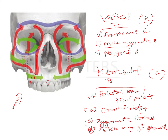The malar zygomatic buttress transmits forces from the posterior dentition. The forces travel from the malar bone to the zygomatic bone and terminate at the base of the skull, running cranially and medially to meet in the upper part of the frontonasal bone, also terminating in the frontal bone.